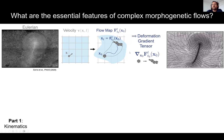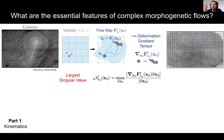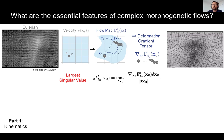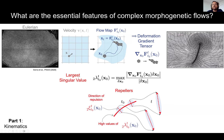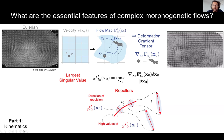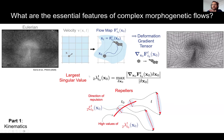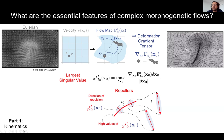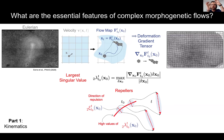The deformation gradient is a tensor — for any initial condition and time interval it's a matrix, so it's hard to visualize. A very relevant piece of information you can extract is its largest singular value: a scalar field telling you how much initially nearby cells will maximally separate. Regions where this largest singular value is very high will demarcate repellers in the embryo — regions where cells starting at opposite sides will maximally separate over time.